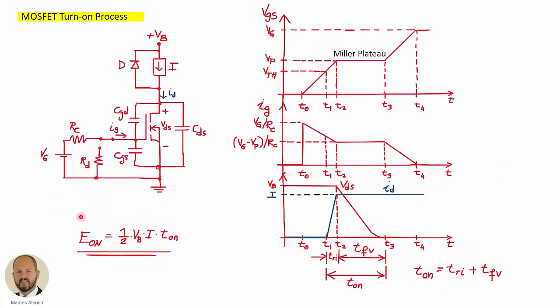Let's start by the turn-on process. As we have seen in the previous video, this is the equation that we need to calculate the energy that is going to be dissipated during the turn-on process. In this equation we know the voltage and we know the current, but we need to calculate from the data sheet information the on-time. These are the waveforms that we have during the turn-on transition. This is the complete on-time, and we have two intervals.